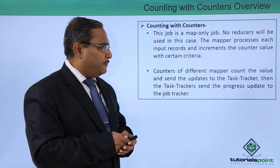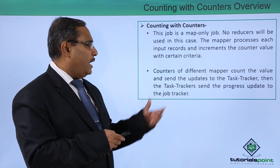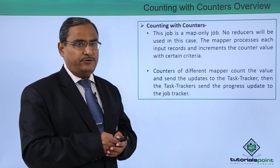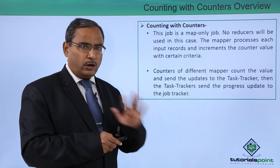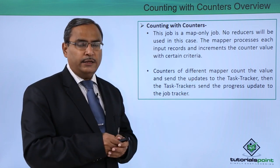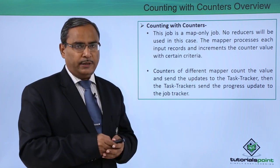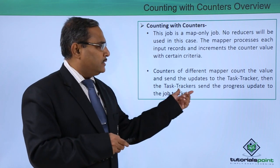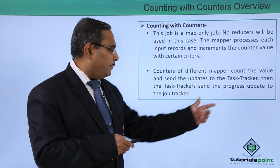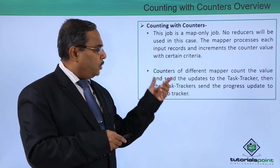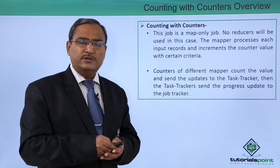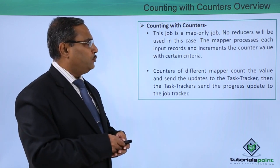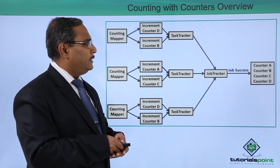Counters from different mappers count the values and send updates to the task tracker. We are not having any reducer, but we have a task tracker and a job tracker. The task tracker sends the progress update to the job tracker, and the job tracker will produce the final output.